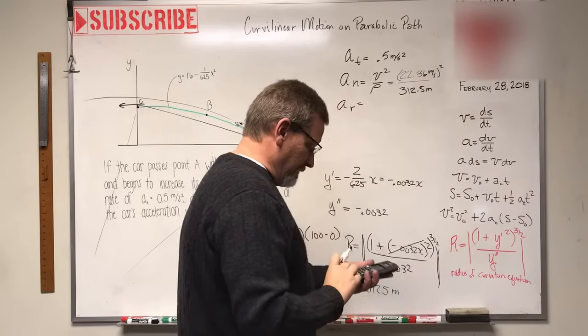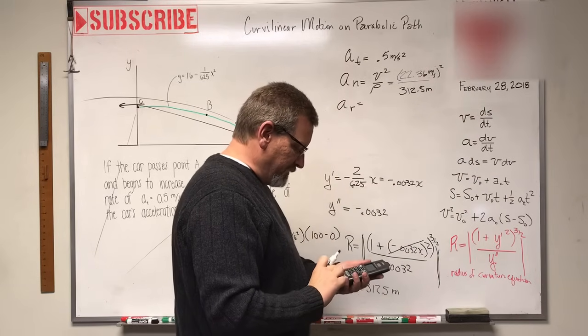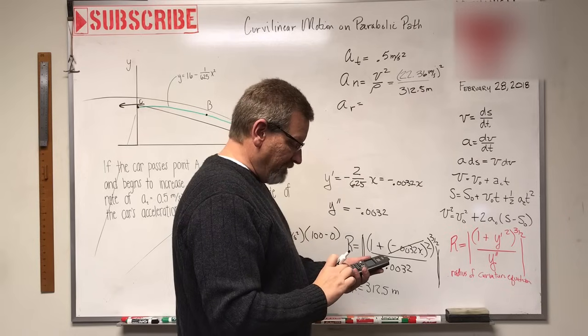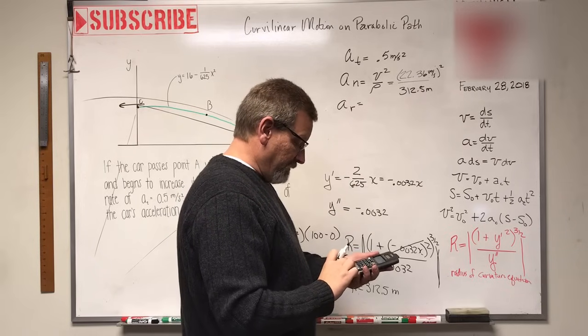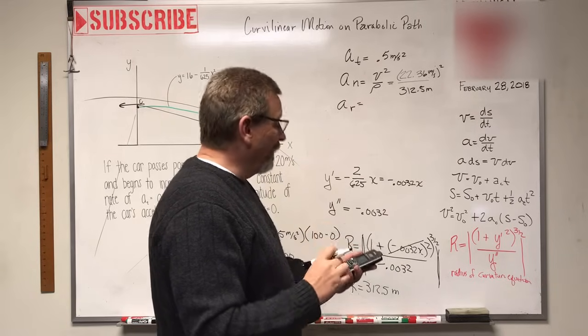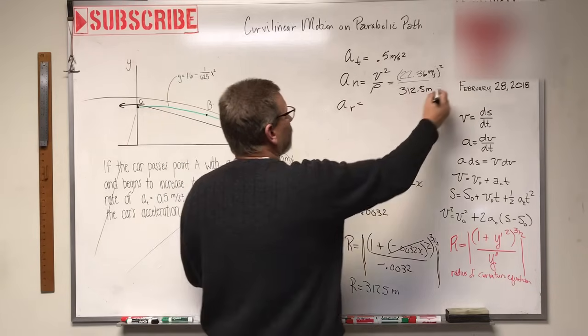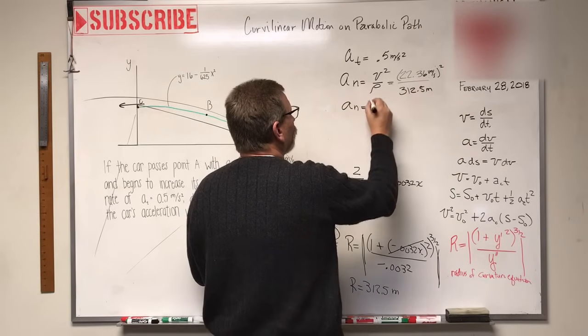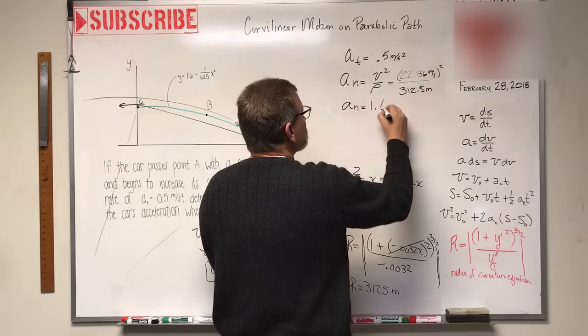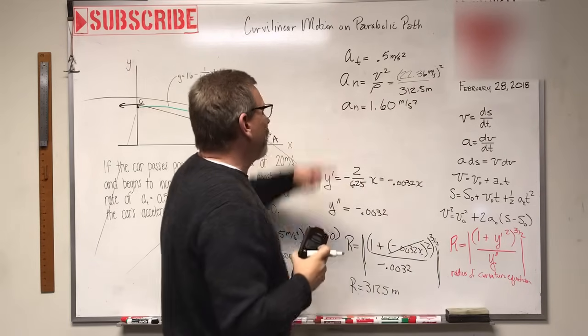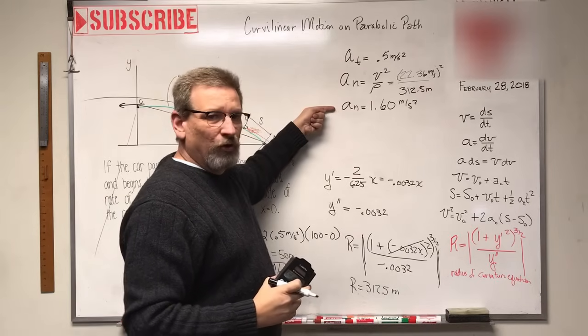Let's see what that gives me. 22.36 squared divided by 312.5 equals 1.60. So the normal acceleration a_n equals 1.60 meters per second squared. So now I know the tangential, I know the normal.